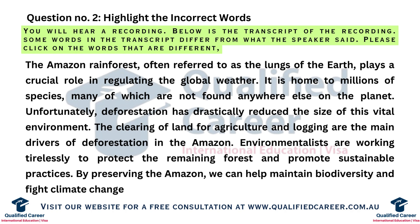The clearing of land for agriculture and logging are the main drivers of deforestation in the Amazon. Conservationists are working tirelessly to protect the remaining forest and promote sustainable practices. By preserving the Amazon, we can help maintain biodiversity and combat climate change.